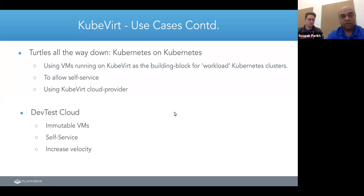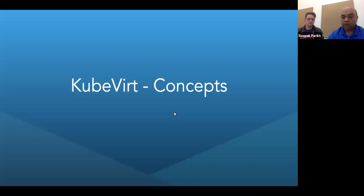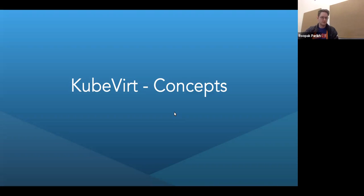The last use case is KubeVirt being used in dev/test clouds. You have immutable virtual machines - if you have builders still based on VMs but you want to start them and throw them away, you can give self-service access to your developers to run virtual machines, increasing velocity and productivity inside your CI/CD pipeline.